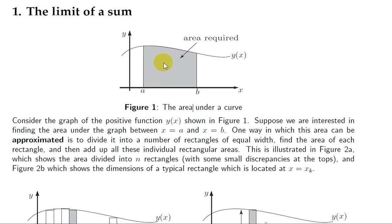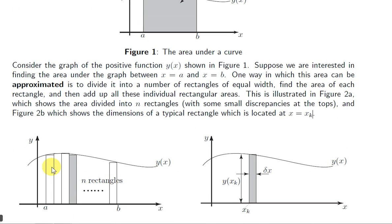Suppose that we want to get the area under the graph of the function y of x between x equals a and x equals b. For simplicity, we will assume that y of x is positive for values of x between a and b. We can imagine dividing the area under the curve into n rectangles of equal width. We will call the width delta x.